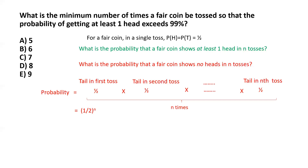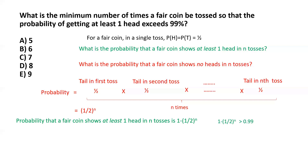Now that we have found the probability of the complementary event, we can find the probability of the event we're interested in — that the fair coin shows at least one head in n tosses — by subtracting the complementary probability from 1, giving us 1 minus one half to the power n. This has to exceed 99%, so we need to find the minimum value of n for which this probability exceeds 99%.